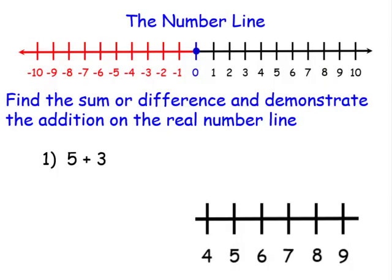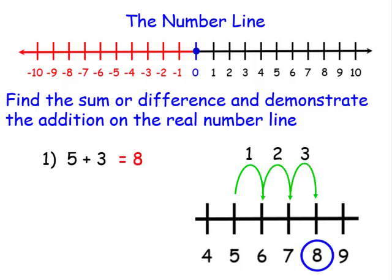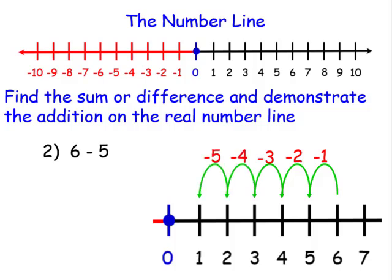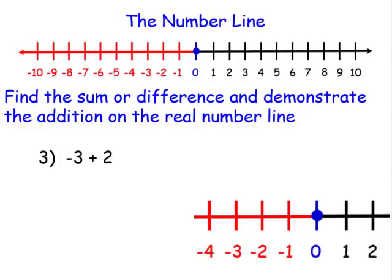5 plus 3: we'll begin at 5 and go to our right 3 places, and we'll end up at 8. Our answer is 8. 6 minus 5: we'll begin at 6 and go to our left 5 places, and our answer is 1. Negative 3 plus 2: we'll start at negative 3 and go to our right 2 places, and our answer is negative 1.